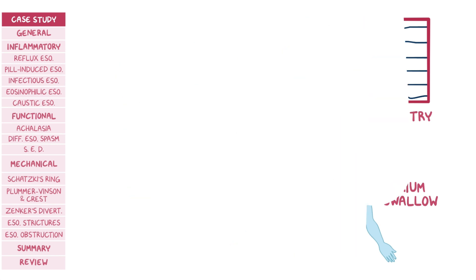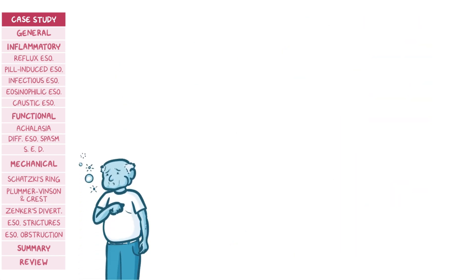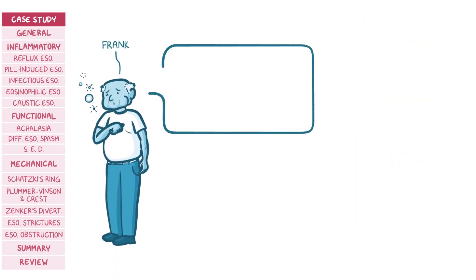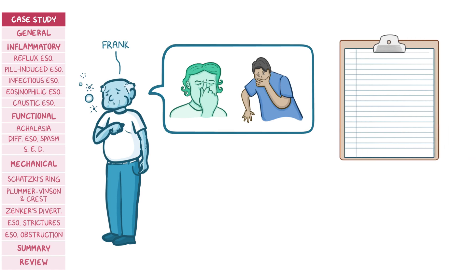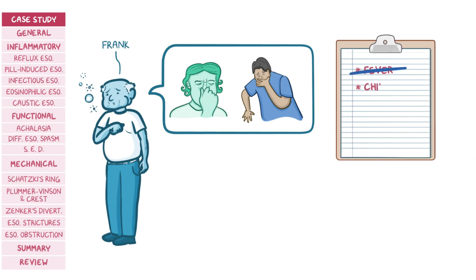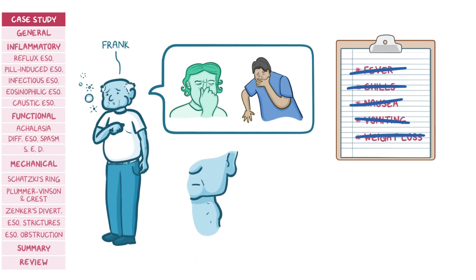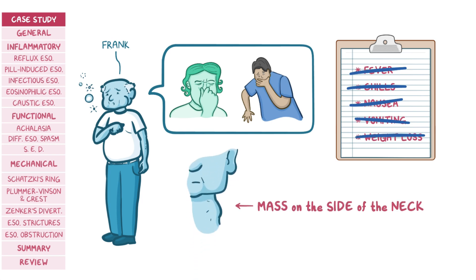At the same time, a 62-year-old man named Frank comes to the clinic because of bad breath, regurgitation of food overnight, and trouble swallowing food. He has had these symptoms for several months. He denies fever, chills, nausea, vomiting, or weight loss. Physical examination shows a mass on the side of his neck.